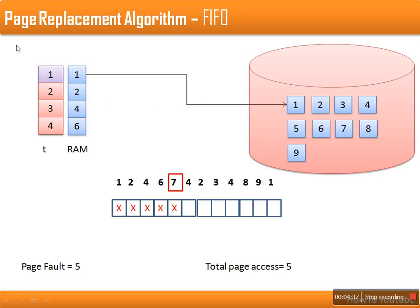Before replacing a page, that page has to be stored back in secondary memory. You might wonder why this swapping out is necessary. The reason is that while this page was loaded in RAM, the user may have performed some updates or changed data in this page. So while swapping out, the page is permanently saved in secondary memory — that's why the swap-out is necessary.